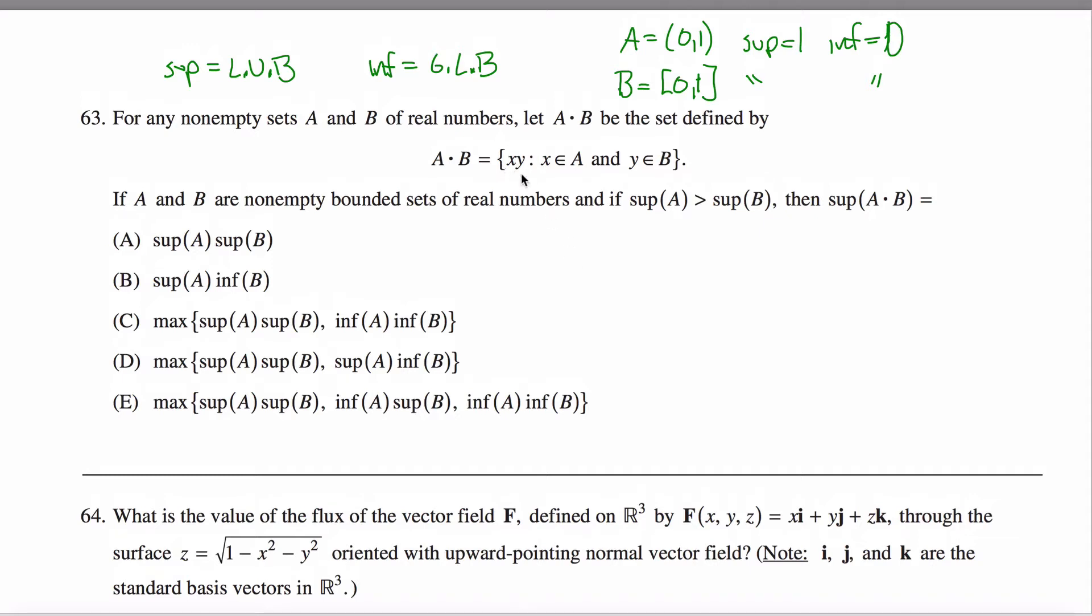Well, okay. Think about how you can make elements of this set as large as possible. And you're like, oh, that's easy. Just take the largest element from A and multiply it by the largest element from B. And I guess really they don't even need to be in those sets. Maybe I take the supremum of A and multiply that by the supremum of B.